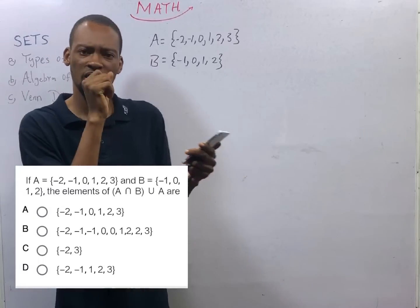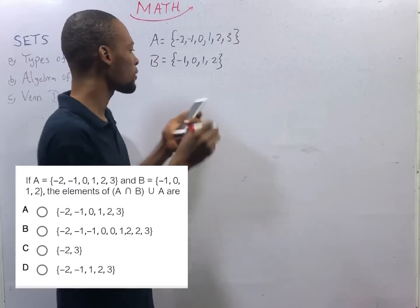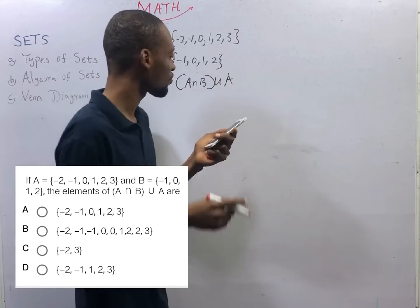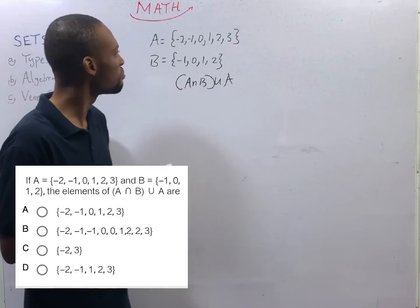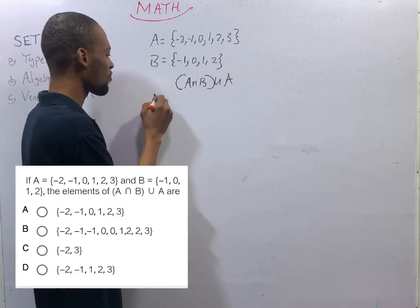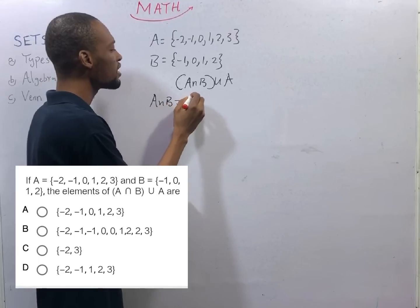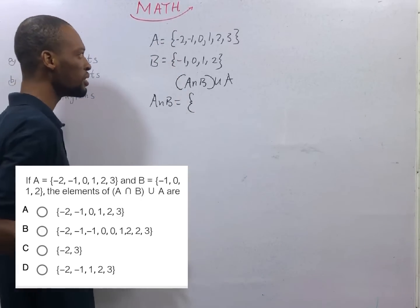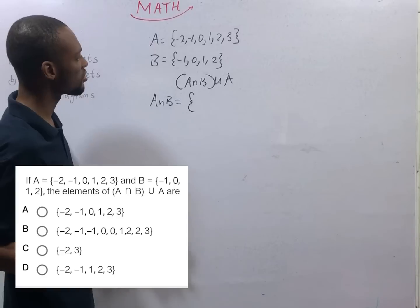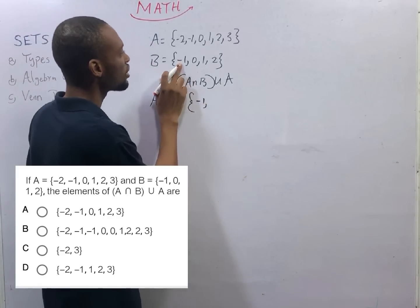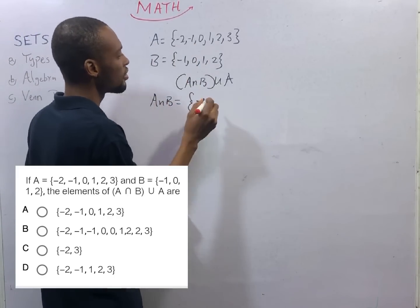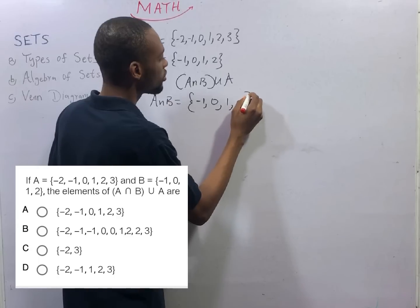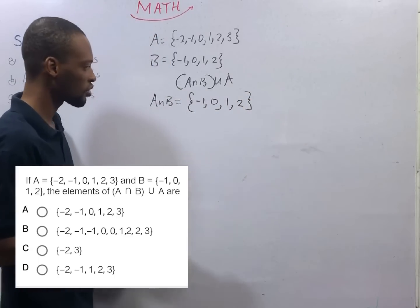Given these two sets, we are asked to find A intersection B union A. What is A intersection B? A intersection B is simply a set of the elements that are common to both A and B. From my observation, that should be minus 1, there is minus 1 here, there is here. There is 0 here, there is 0 here. There is 1 here, there is here. And also, we have 2.